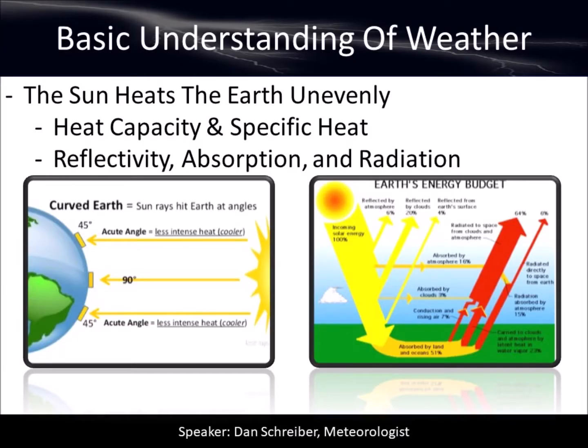The first thing we need to understand about weather is that if the sun didn't shine and the earth wasn't curved, we wouldn't have weather. With a curved earth, the sun shines at different angles and at different places at the same time — it's daytime one place, nighttime another. The sun may be shining directly at the equator but more indirectly at the North Pole, which causes different types of heating.